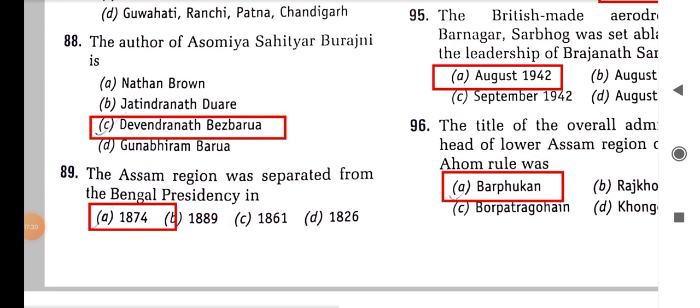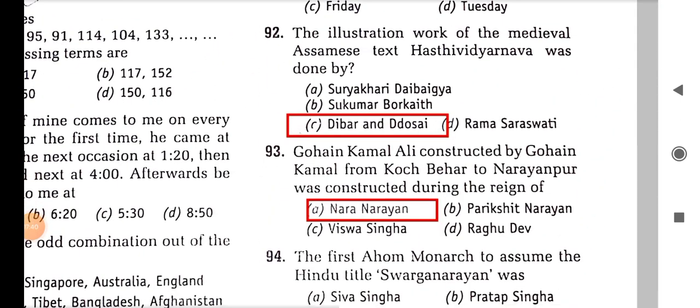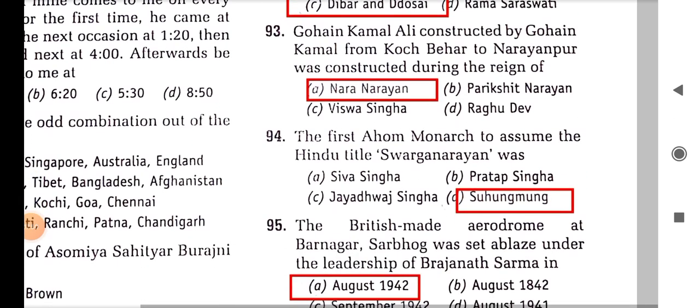The author of Somya Sahityar Buranji is Devendranath Bezbarua. The Assam region was separated from the Bengal Presidency in 1874. The illustration work of the medieval Assam text Hasti Vidya Nrupa was done by Dibar and Dosai, and Guhainkamalari constructed by Guhainkamal from Kuch Bihar to Narayanpur was constructed during the reign of Kuch King Narayan.